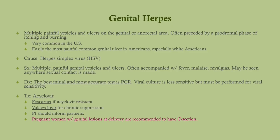Genital herpes is very common in the U.S. This is painful vesicles and ulcers in the genital or anorectal area. Usually there's a prodrome — itching and burning — and then the eruption occurs. The cause is herpes simplex virus. There may be accompanying flu-like symptoms, and it can be seen anywhere sexual contact is made, including the oropharynx. Diagnosis is by PCR, which has supplanted the Tzanck smear. Viral culture is less sensitive but important to get because we look for viral sensitivity.